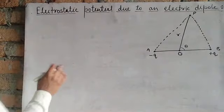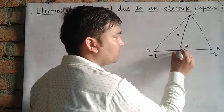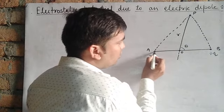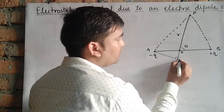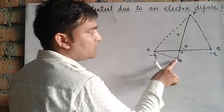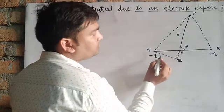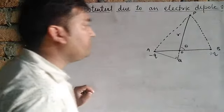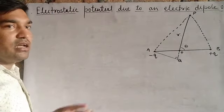The formula for potential due to a single charge is 1 upon 4 pi epsilon 0, q upon R. We have the charge, but we need the distance from the charge to point P. So we first find the values of PA and PB. To do this, we produce PO up to point Q such that AQ is perpendicular to PQ, and AP is approximately equal to PQ. Triangle APQ is an isosceles right-angled triangle.